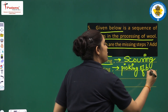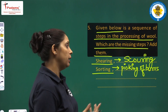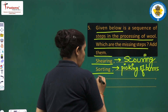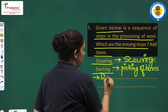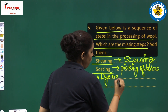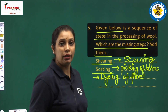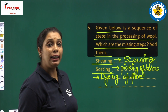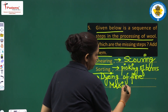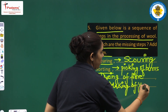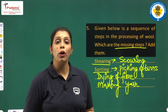Burrs are the thin hair-like structures you see when you wear a sweater — those are burrs. After picking of burrs, which step comes? It is dyeing of fiber. You have to write dyeing of fiber, because we need color according to our requirement. After dyeing of fiber comes making of yarn. In this way, all the steps are complete.